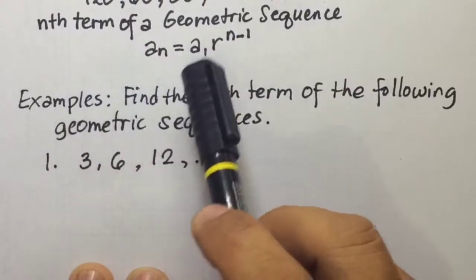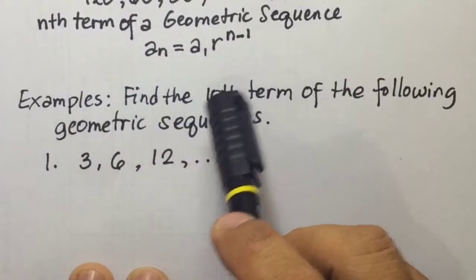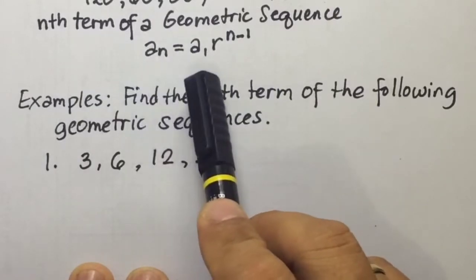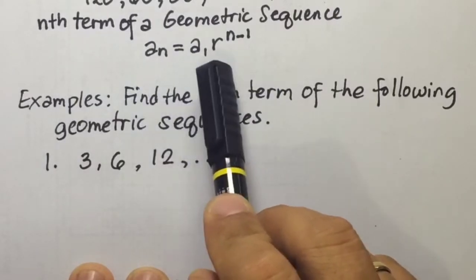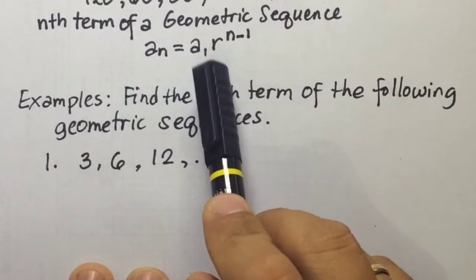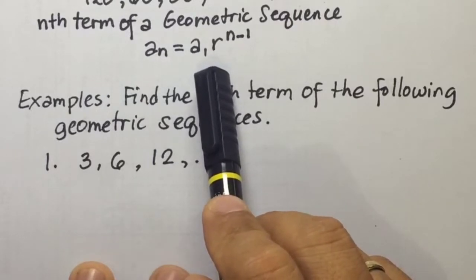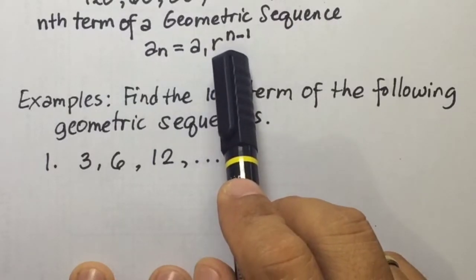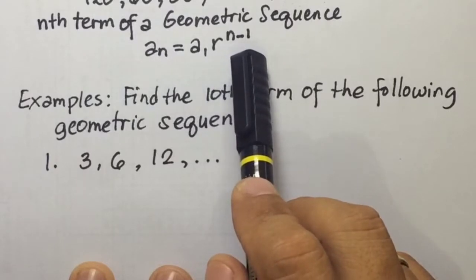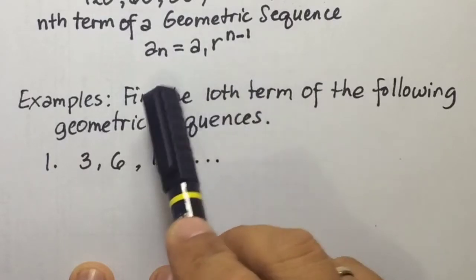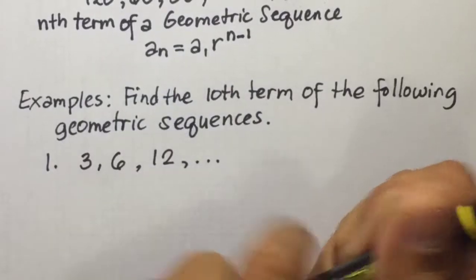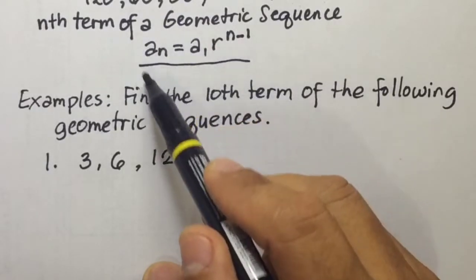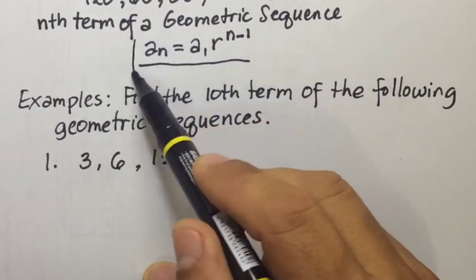Now, the nth term of a geometric sequence is given by a sub n equals a sub 1, the first term, times R, the common ratio, raised to the power of n minus 1. This is the formula used in finding the nth term of a geometric sequence.